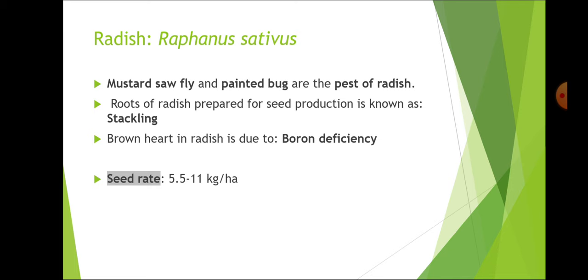Radish is a very important root crop. The botanical name of radish is Raphanus sativus. It belongs to the family Brassicaceae or Cruciferae. Chromosome number is 18 and the edible part of radish is fusiform roots.